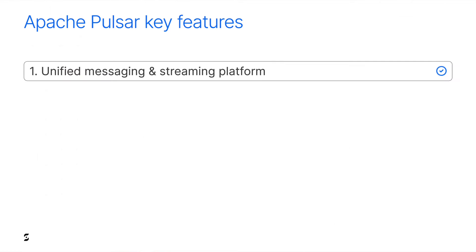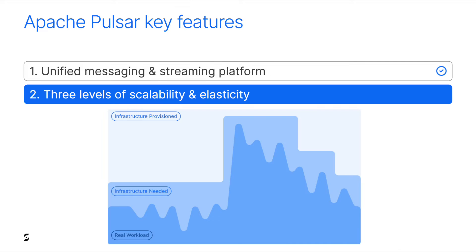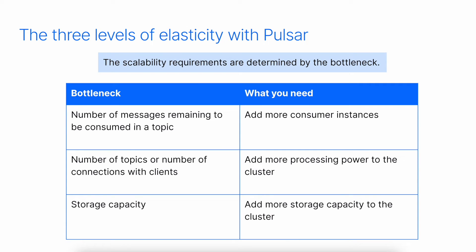Pulsar can handle both messaging and streaming use cases. Now let's talk about Pulsar's scalability and elasticity. These are different things. Elasticity means you can grow or shrink resources quickly to adapt to workload changes, so you can save infrastructure costs by avoiding over-provisioning. Some data streaming platforms like Kafka and Pulsar can scale very well, but Pulsar is both scalable and elastic. The scalability requirements are determined by the bottleneck you have to address.